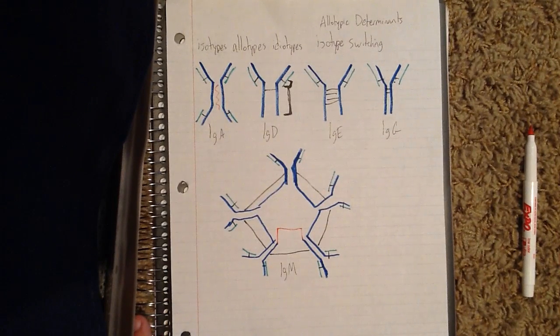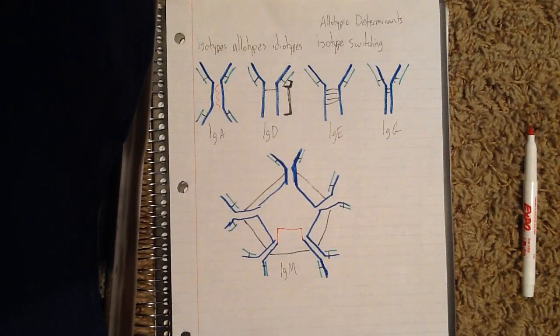An idiotype is the shared characteristic between a group of immunoglobulin or T-cell receptor molecules based on the antigen-binding specificity of the variable region.